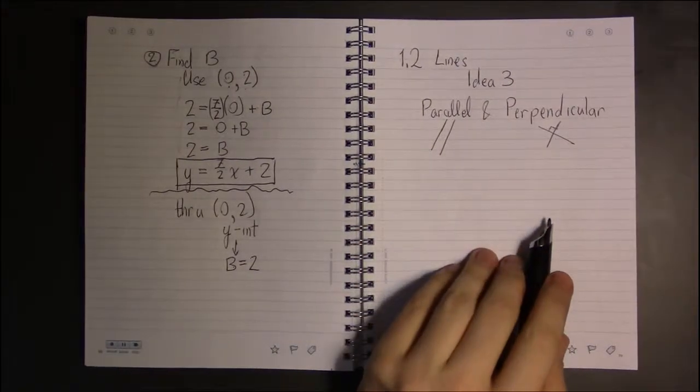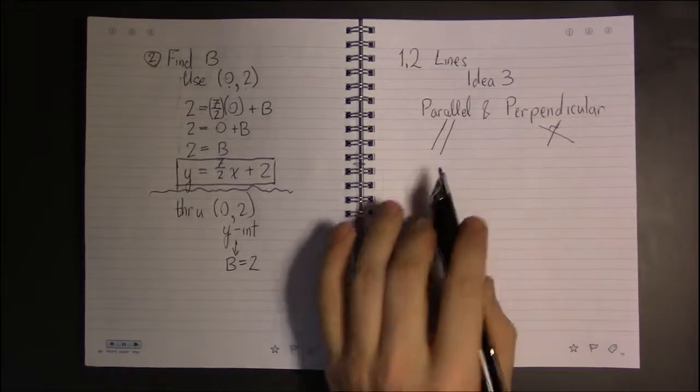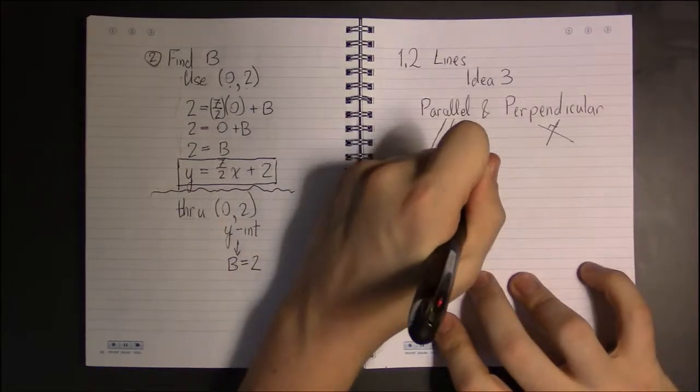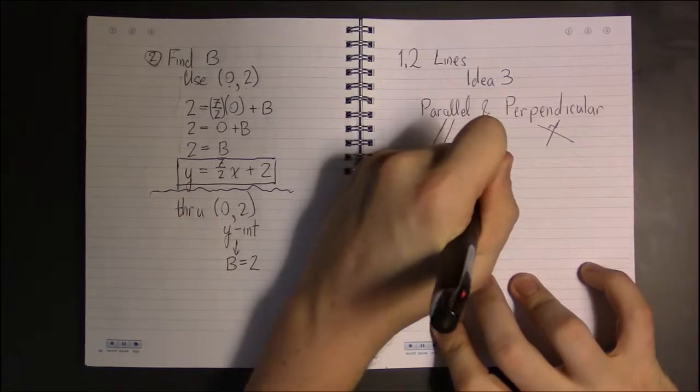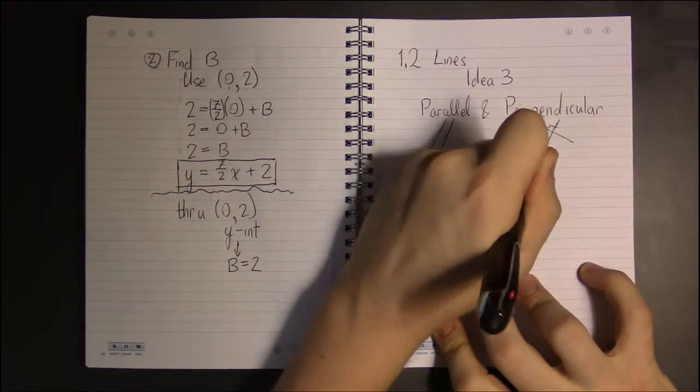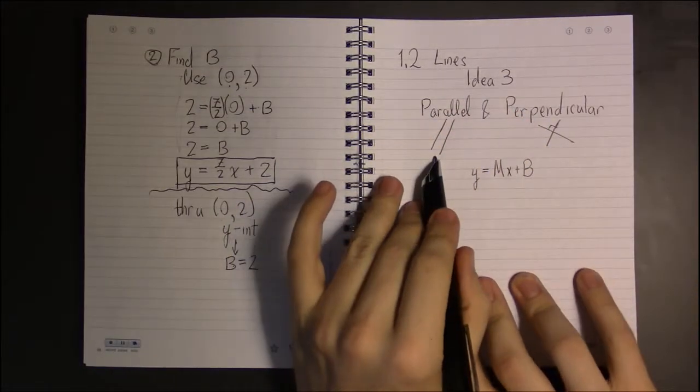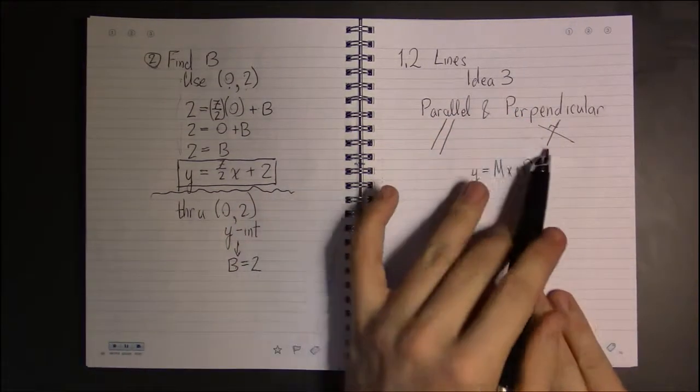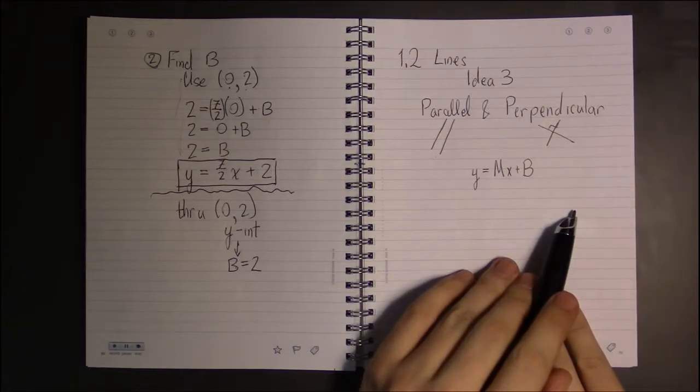That's the geometric meaning, but what does it mean for two lines that look like this? What does it mean for them to be parallel? What does it mean for them to be perpendicular?